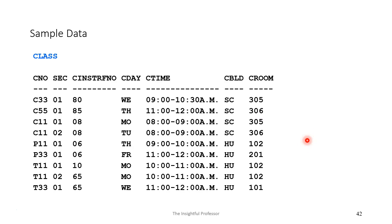The class table: each class represents a scheduled offering of some course, and the course is identified in CNO. The class is uniquely identified by a combination of the course number and a section number. Notice that course number by itself does not uniquely identify a row — we have multiple classes for C11 and multiple for T11. And section number by itself does not uniquely identify a row — there are multiple instances of 01 and multiple instances of 02. We also have information about where and when the class will be delivered.